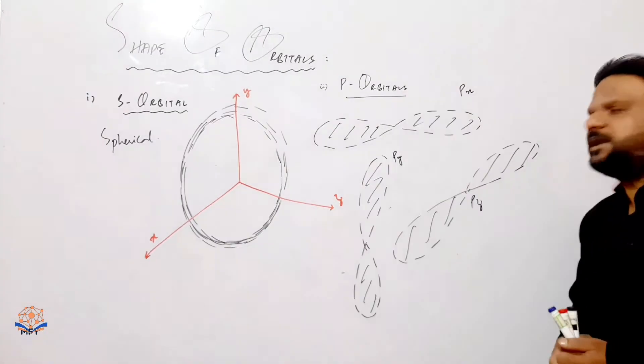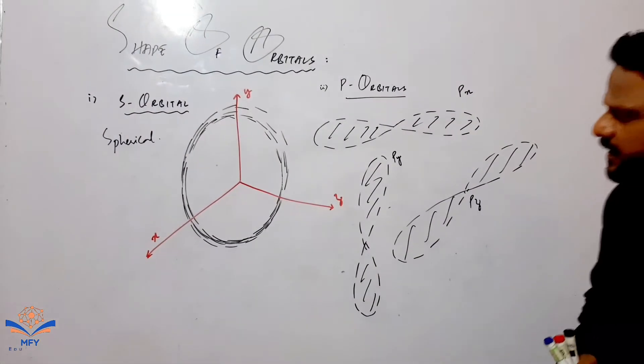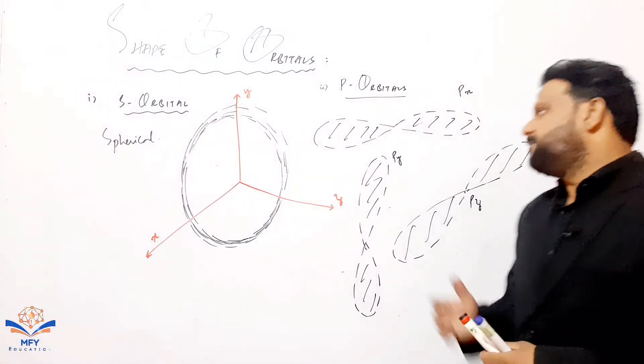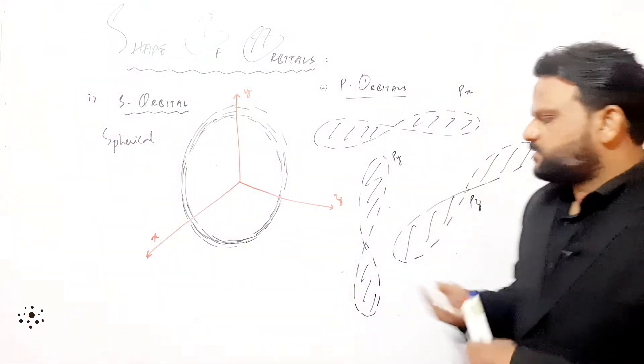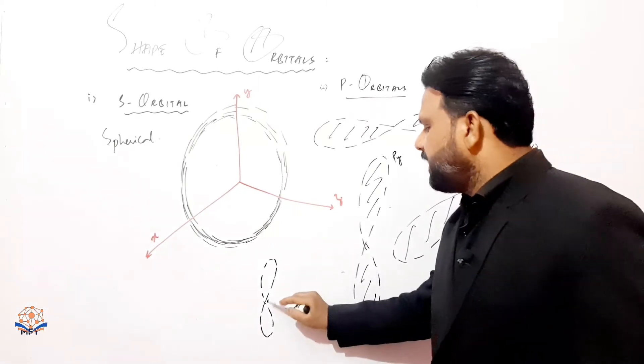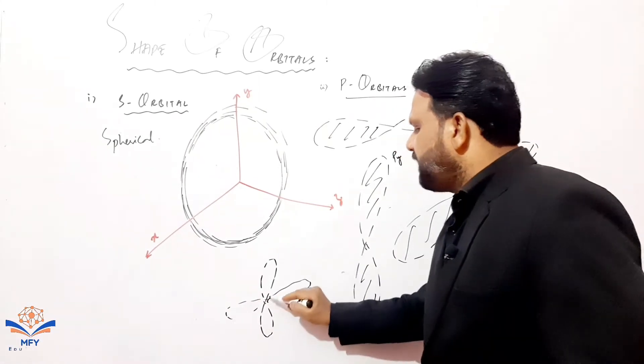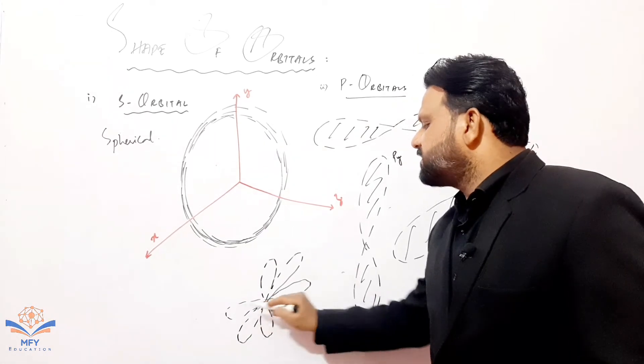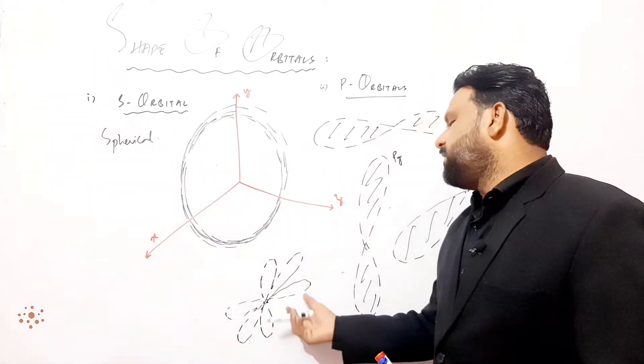P has three orbitals: px, py, and pz. You can combine all three p orbitals. The structure is the same, but it is difficult to understand when you have combined all three p orbitals together.